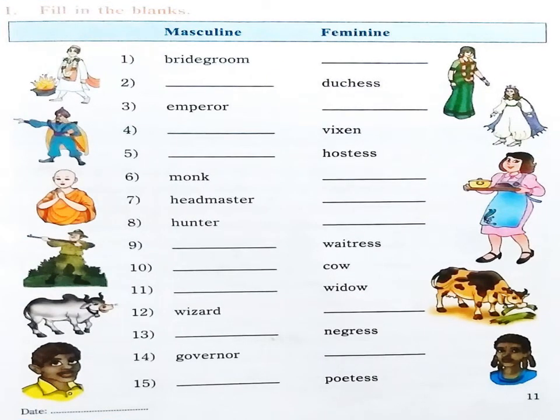Fill in the masculine or the feminine wherever necessary. The first one: Bridegroom — the feminine is Bride. Now children, as I gave you the first example, you do the next one. Duchess — what is the masculine of Duchess? Very good, Chandana. Duke. Can someone tell me the feminine form of Emperor? Very good. Empress.